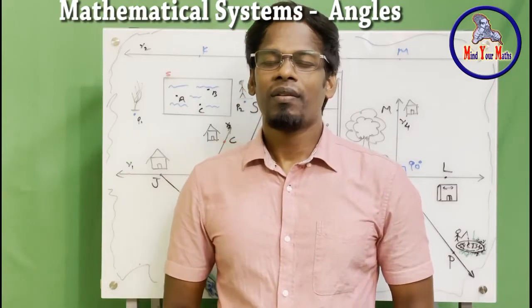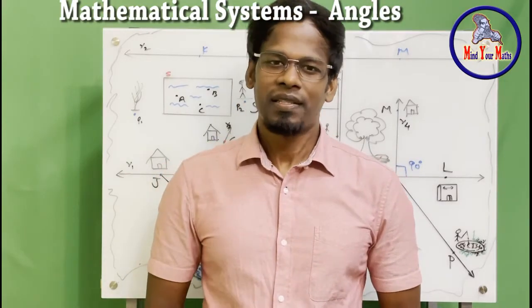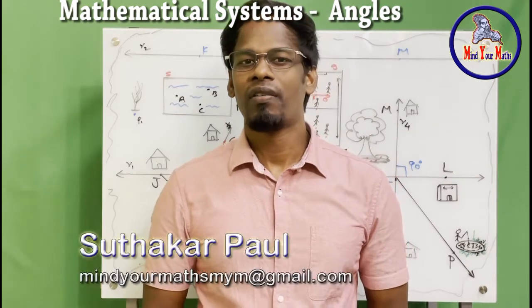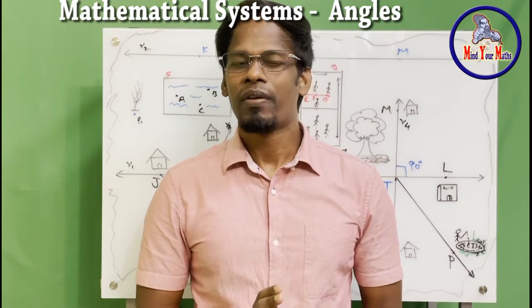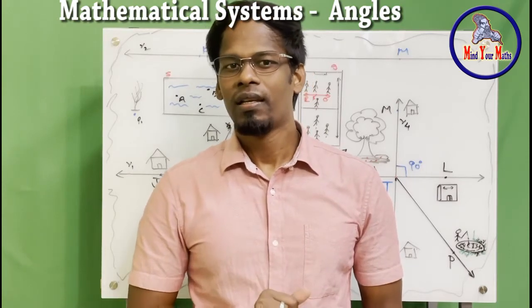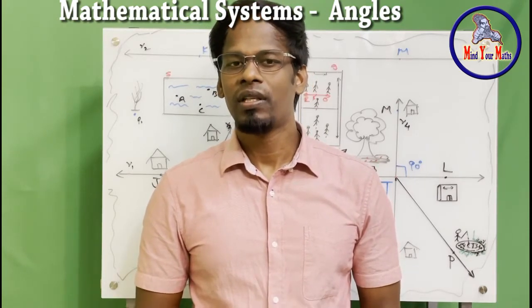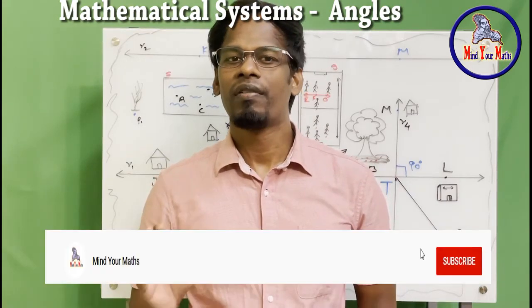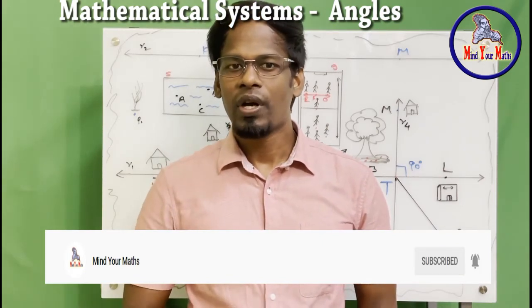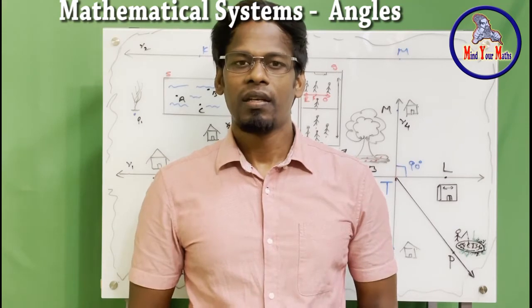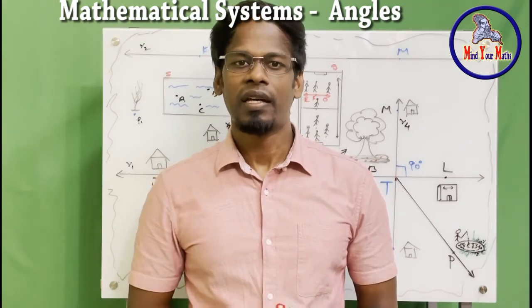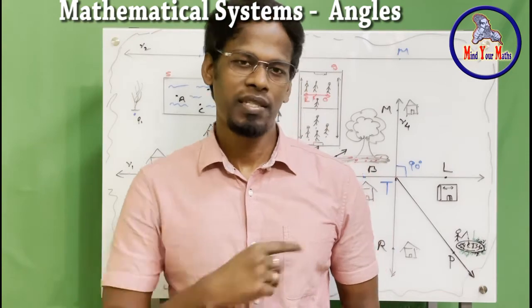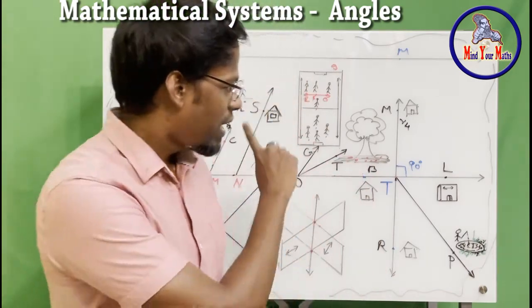Hey guys, so we are studying about mathematical systems. So far we have covered the undefined terms, and in the defined terms we have covered points as well as lines. Now we are going to continue to study about angles, because I'm going to cover the axioms as well as postulates after this video. If you understand angles, it will be easy to understand those topics. I'm going to use the same diagram here.